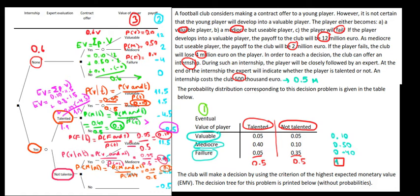And the last one: the probability of being a failure given that he is not talented equals the probability of failure and not talented divided by the probability of not talented. That's 0.35 divided by 0.5, which equals 0.7 — the highest probability, for being a failure.